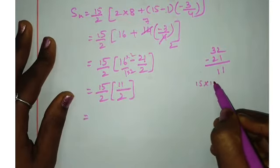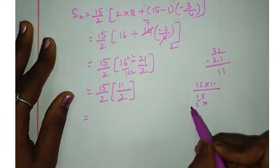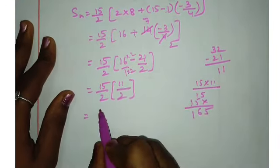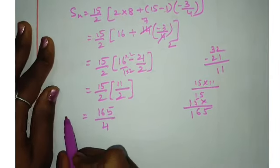15 into 11. 5 1s are 5, 1 1s are 1. Again, 5 1s are 5, 1 1s are 1. So 5, 5 plus 1 is 6 and 1. So 165 in numerator, 2 into 2 is 4. Okay.